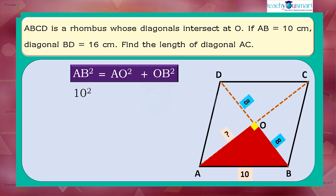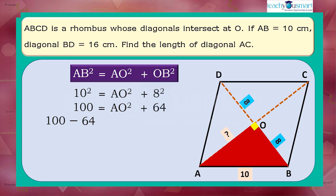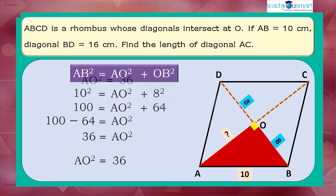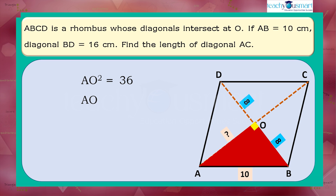That is, 10 squared equals AO squared plus 8 squared; 100 equals AO squared plus 64; 100 minus 64 equals AO squared; 36 equals AO squared, or AO squared equals 36. Therefore, AO equals the square root of 36, so AO equals 6 centimeters.